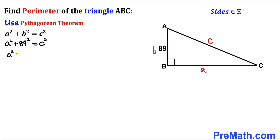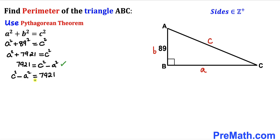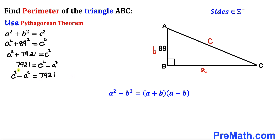Simplifying, that gives us a² + 7921 = c². Moving a² to the right-hand side, we get 7921 = c² - a², or equivalently c² - a² = 7921. Now we recall the difference of squares identity: a² - b² = (a + b)(a - b). Applying this to the left-hand side, we can write (c + a)(c - a) = 7921.